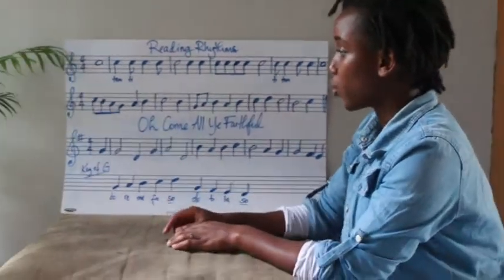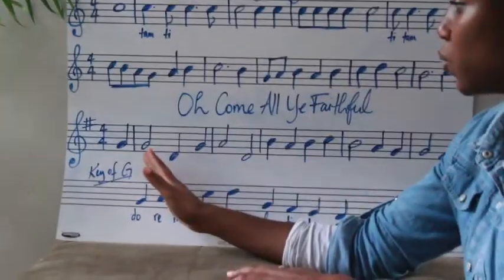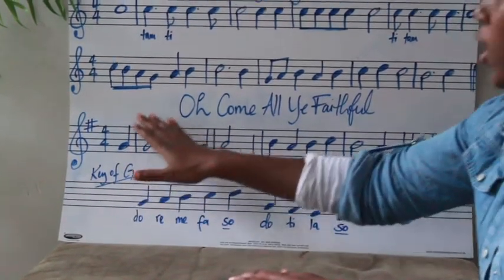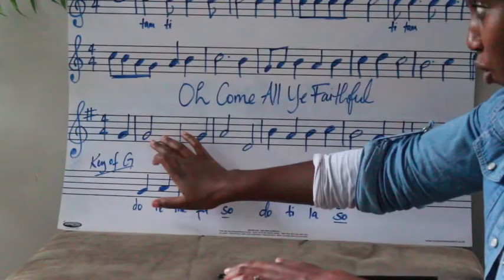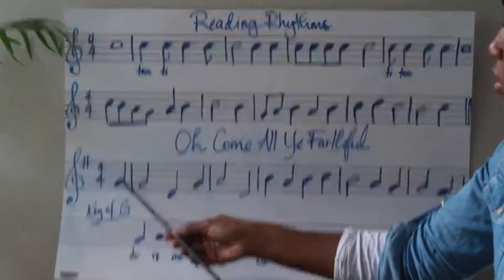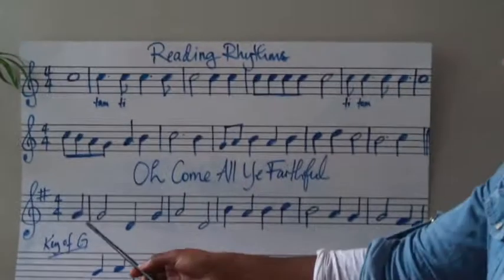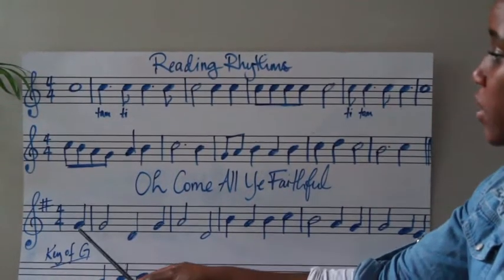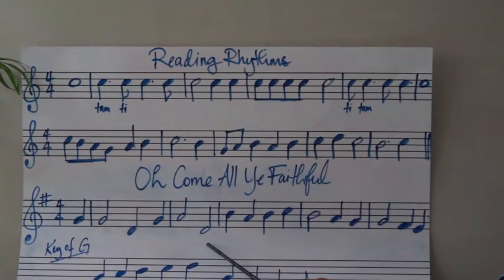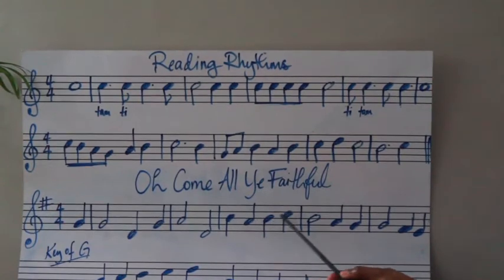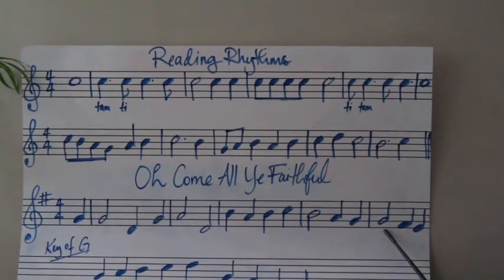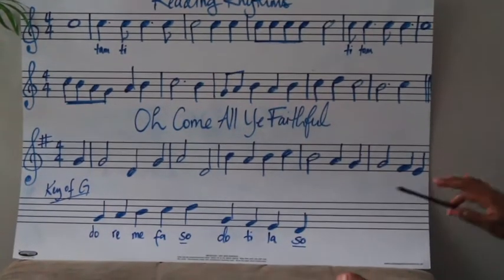In this song, Do is G, so G will be our Do. It means we'll be starting on G and everything works around G as Do. So if we line up all the notes — G, A, B, C, D going up, and G, F-sharp, E, D going down — then G is Do, A is Re, B is Mi, C is Fa, D is Sol. There is a higher Sol and a lower Sol, just as there is a low Do and a high Do.